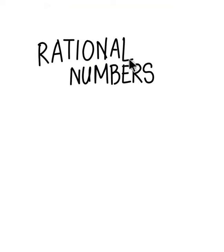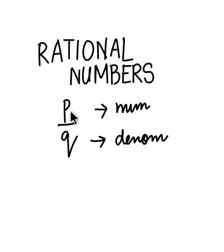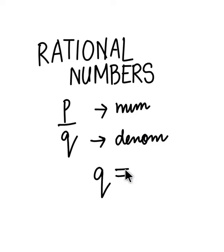Then we have the rational numbers. Rational numbers are of the format P by Q, where P is the numerator and Q is the denominator. P can be any integer — it can be minus 1, minus 100, or plus 2, 500 — P can have any value, positive or negative integers. Q also can be of any value, but Q should not be equal to 0. If Q becomes equal to 0, then this will not be a rational number. So the denominator should not be equal to 0.